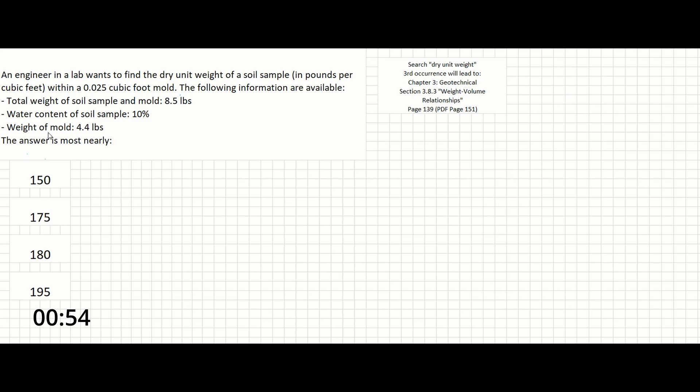Looking at this page, the problem is asking us to find the dry unit weight of a soil sample. The equation provided for dry unit weight on that page is gamma d equals gamma total over 1 plus w.